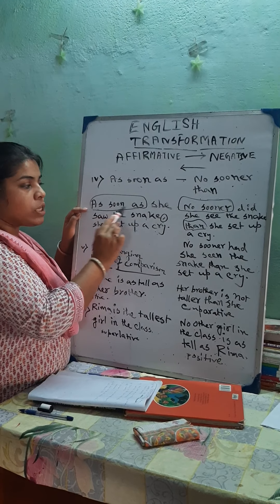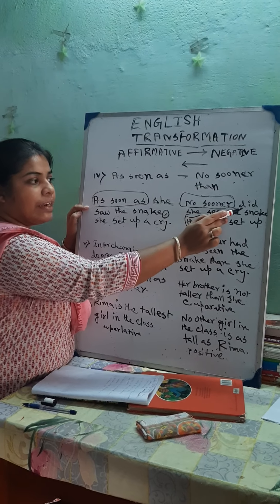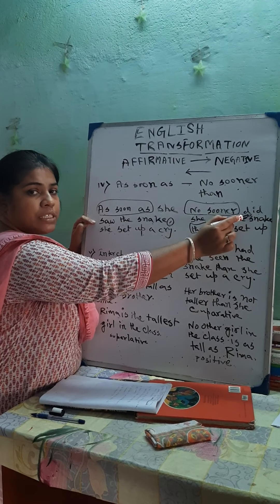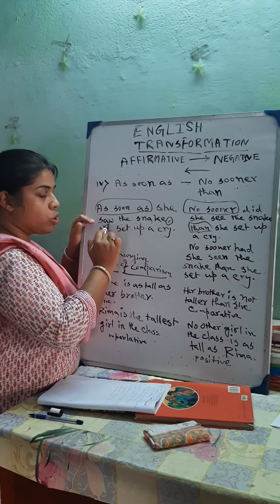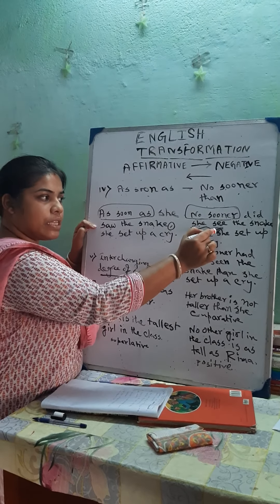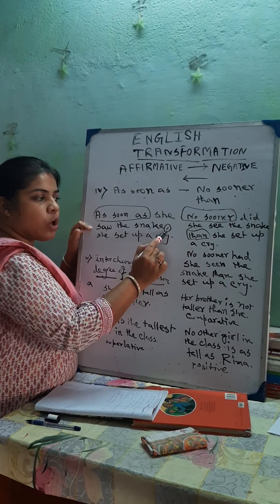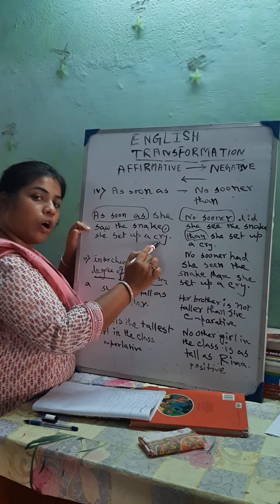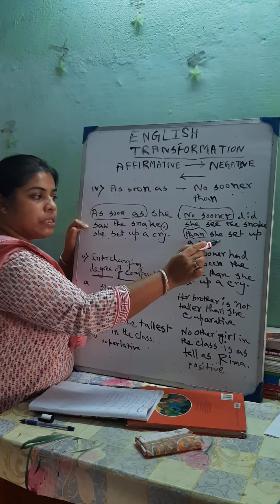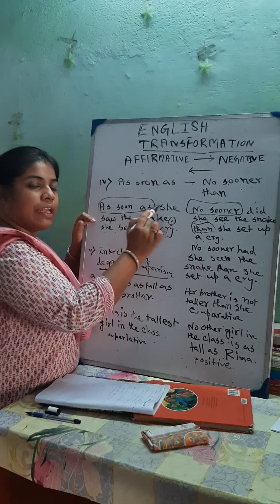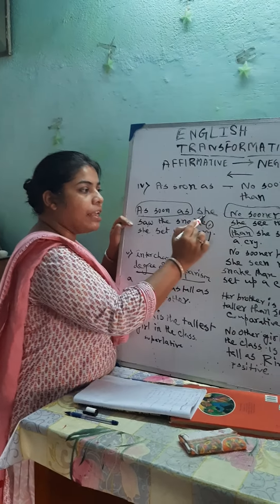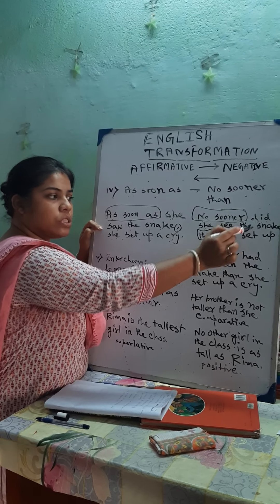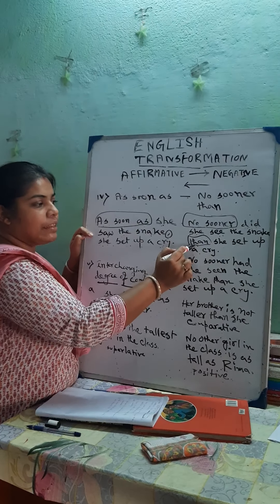So in place of 'as soon as,' we are writing 'no sooner,' then the subject. Here the verb was 'saw,' but since we have written 'no sooner,' we will write 'see' — not 'saw,' but 'see.' Then, in place of the comma, we write 'than,' and then 'she set up a cry.'